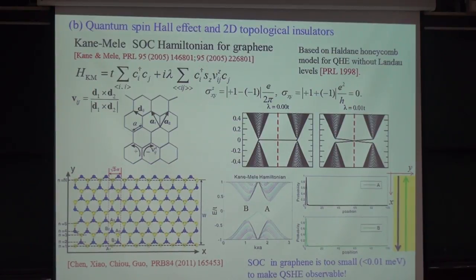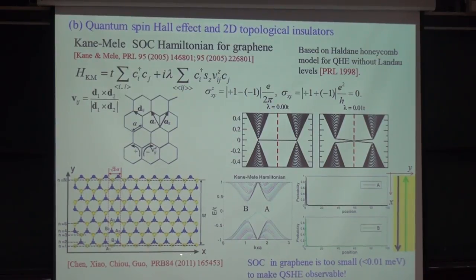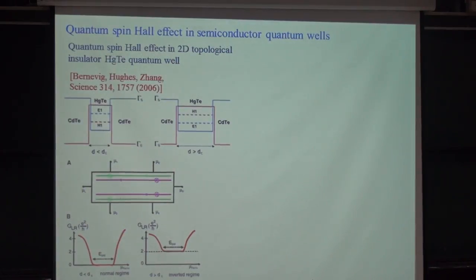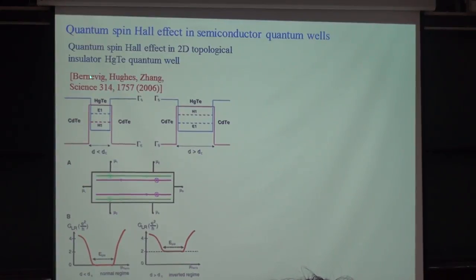However, graphene is a very light element and its spin-orbit coupling strength is very small — only 0.01 meV — below measurable temperature. Nevertheless, this kicked off the field quickly. Shou-cheng Zhang proposed to observe the quantum spin Hall effect in heavy semiconductor quantum wells — specifically the HgTe system — because heavy elements have very large spin-orbit coupling.